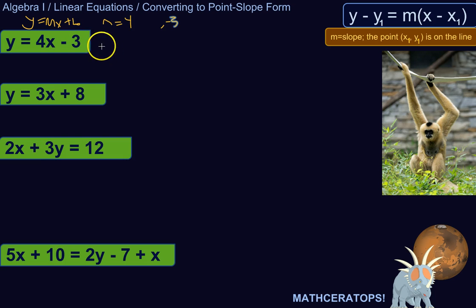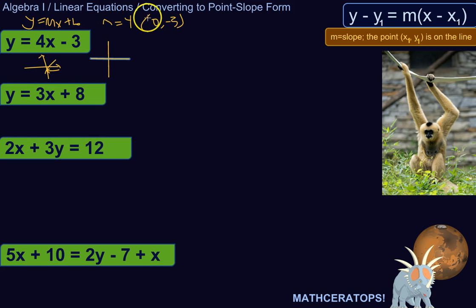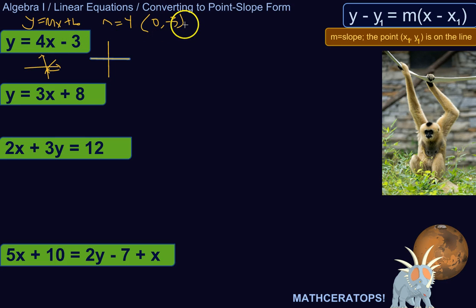We know the line crosses at Y equals negative 3. The X-coordinate of the Y-intercept is always 0 — because for the line to cross the Y-axis, X has to be 0. So just by looking at the slope-intercept form, you get the slope and a point on the line. For point-slope, any point works. For slope-intercept, it tells you a special point: the Y-intercept. In this case, that point is (0, negative 3).